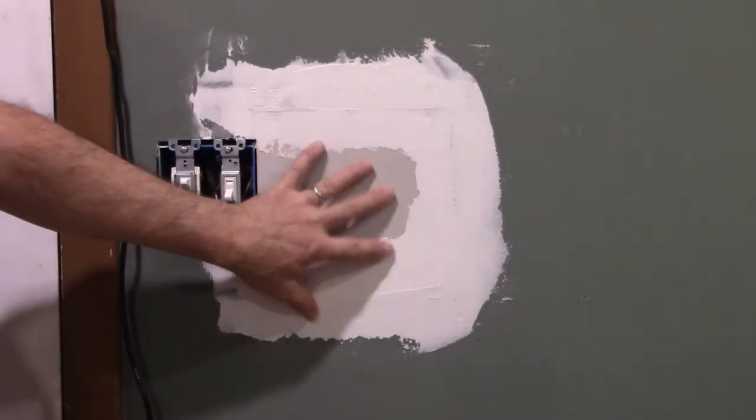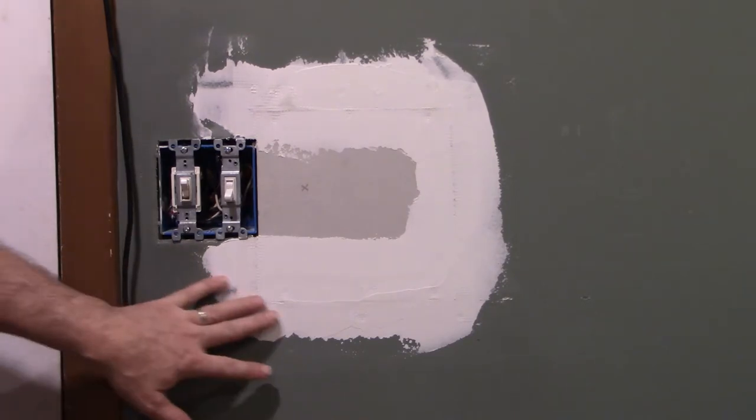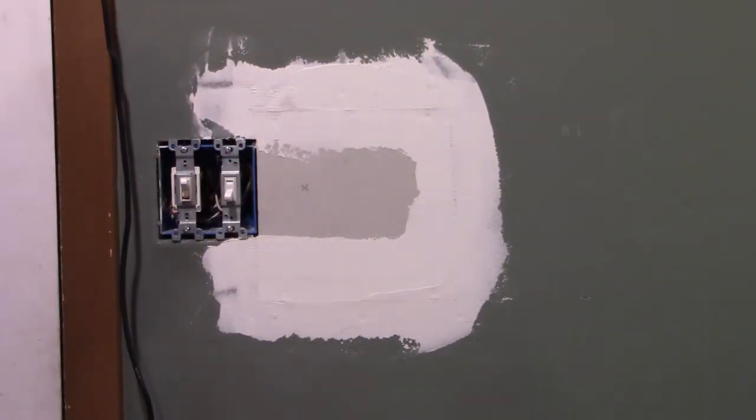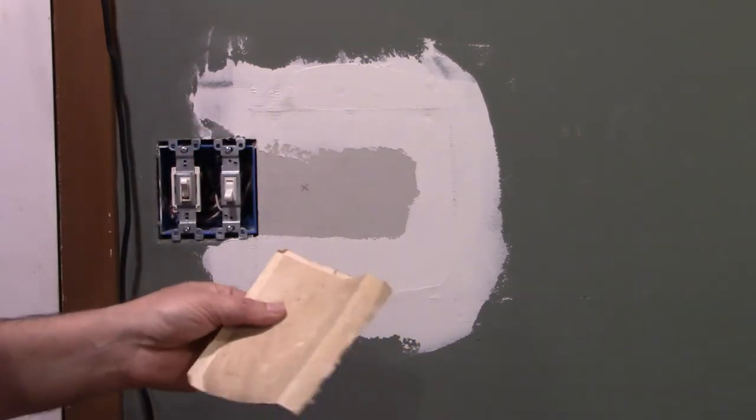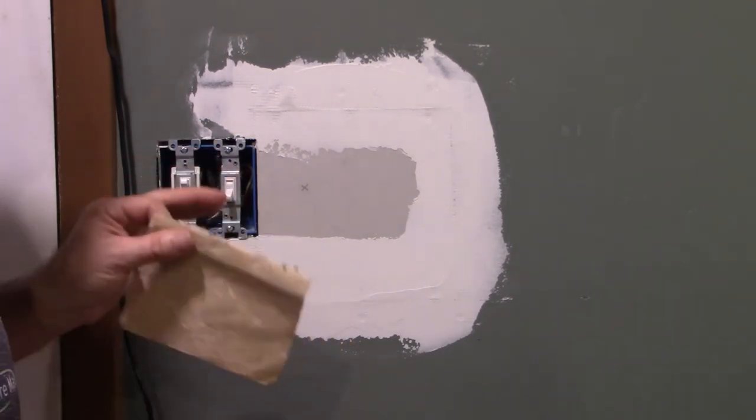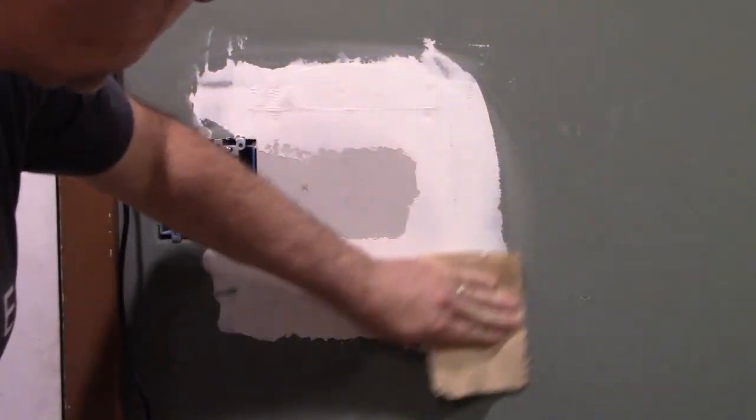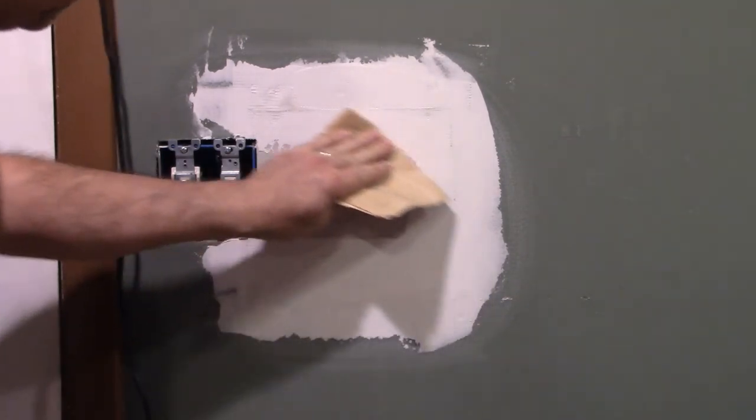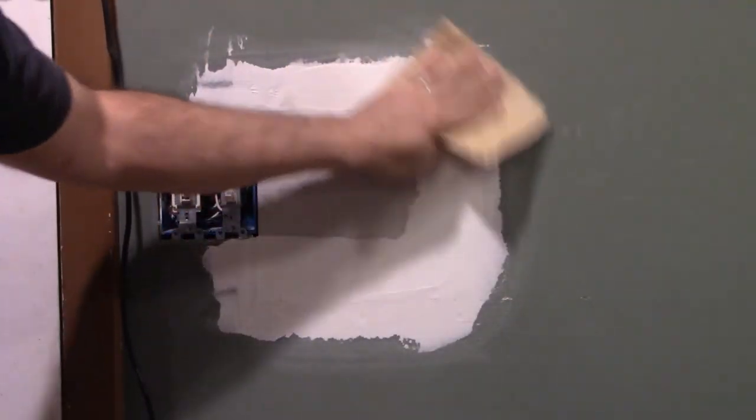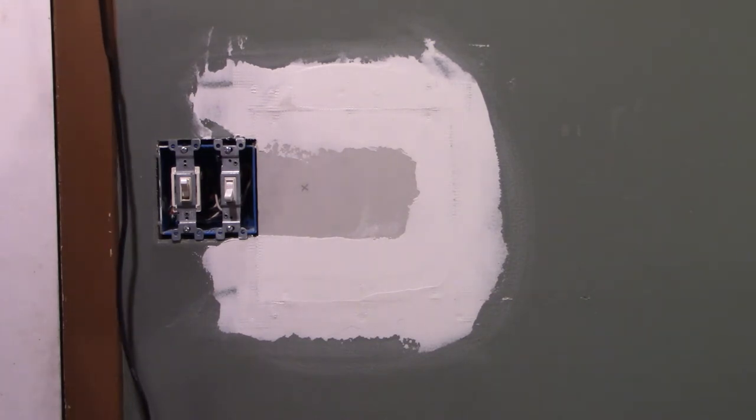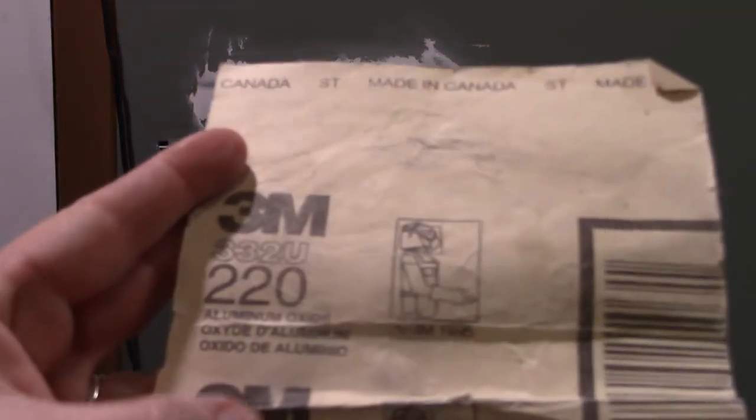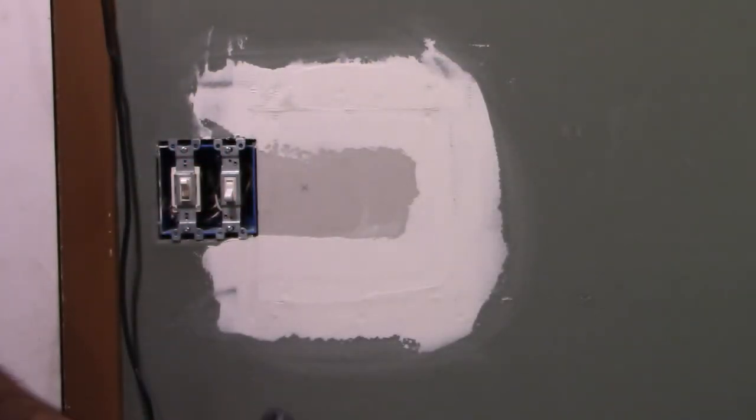Okay we're back at our sheetrock drywall repair. And it's actually the same day. We didn't put the mud on too thick. So it's already dry pretty much. That one spot there looks a little wet. But it's fine to put on our next coat. Now I've got a piece of very thin sandpaper. And I'm not sanding. I'm just going to lightly knock down any rough edges.